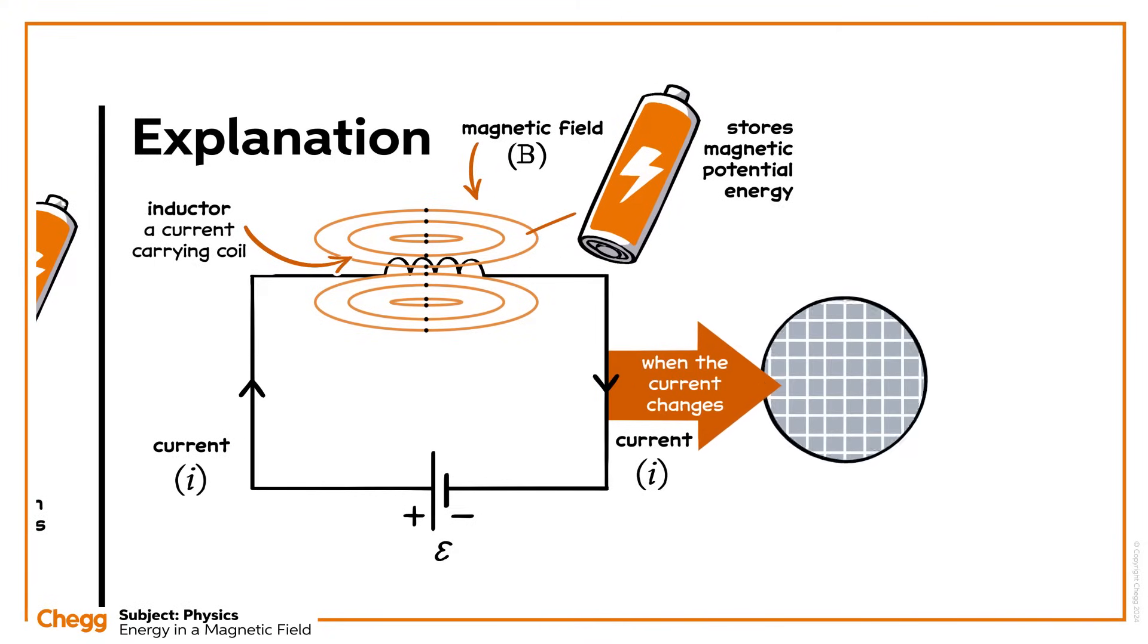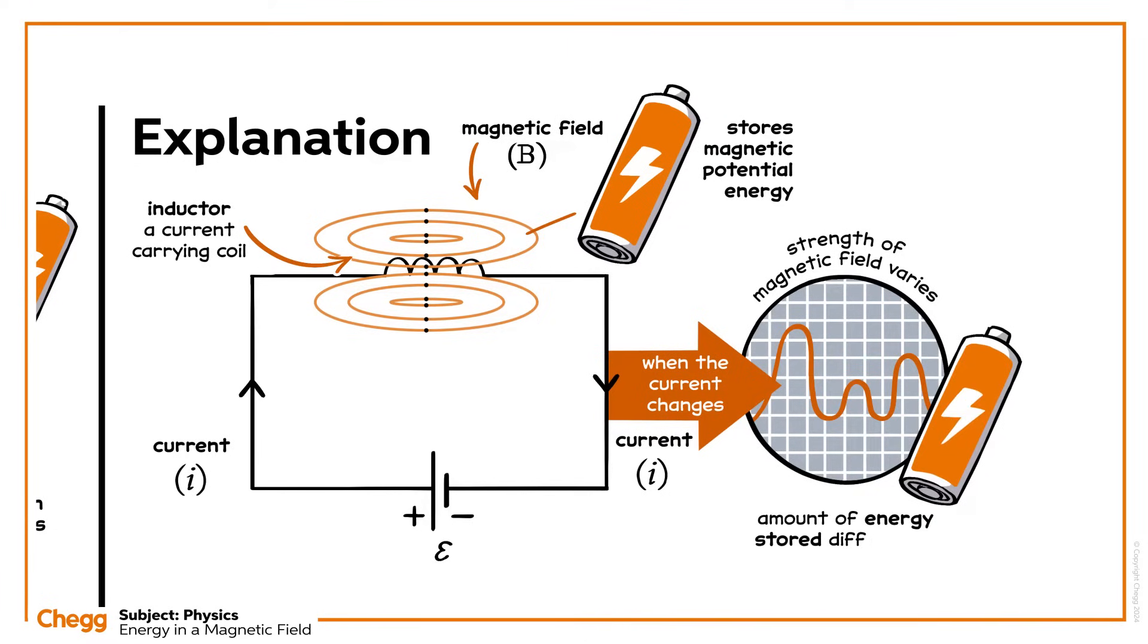When the current changes, the strength of the magnetic field varies, and therefore the amount of energy it stores differs too.